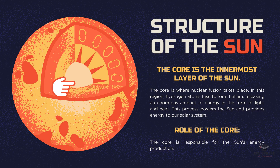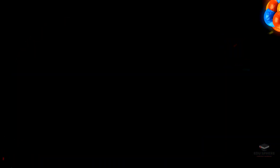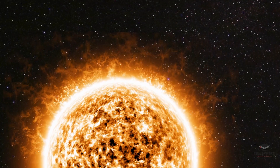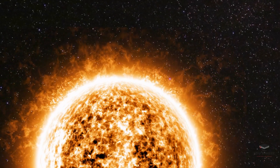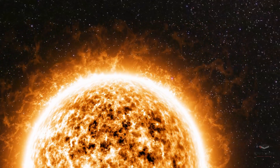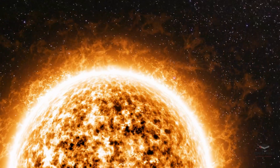Let's get into the Sun's structure, beginning with its core. The core is the innermost region where nuclear fusion occurs. Here, hydrogen atoms fuse together to form helium, releasing vast amounts of energy in the form of electromagnetic radiation, including light and heat. This energy generation is fundamental to the Sun's brightness and its role as the solar system's powerhouse.